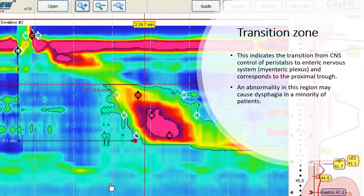The transition zone indicates the transition from the central nervous system control of peristalsis to the enteric nervous system, which is the myenteric plexus, and corresponds to the proximal trough. An abnormality in this region may cause dysphagia in a minority of patients.